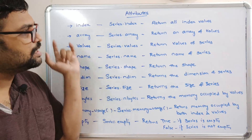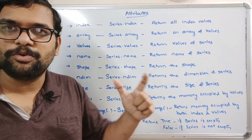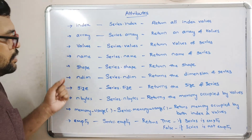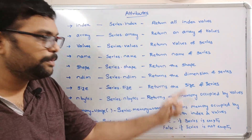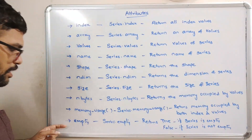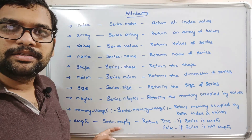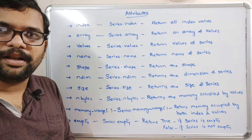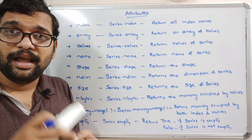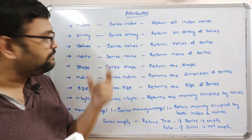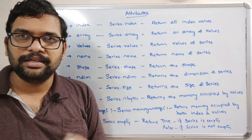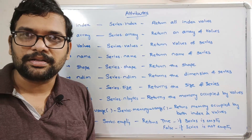These are the few attributes which give information about the series — index, array, values, name, shape, dimension, size, memory occupied by values, memory occupied by index and values, and empty. Let us move on to the interpreter and see these attributes one by one.